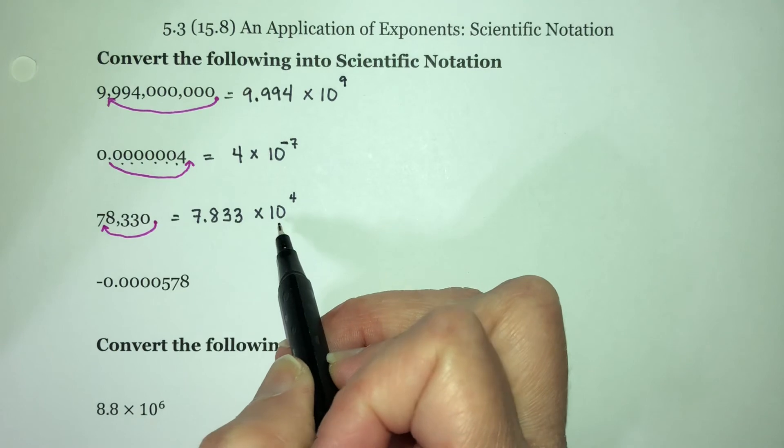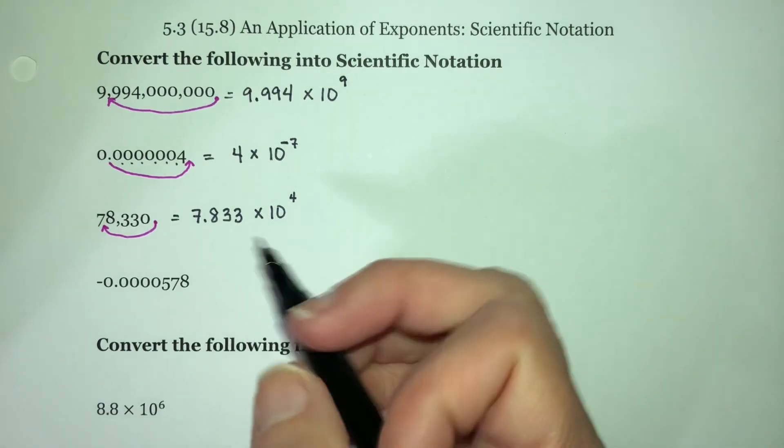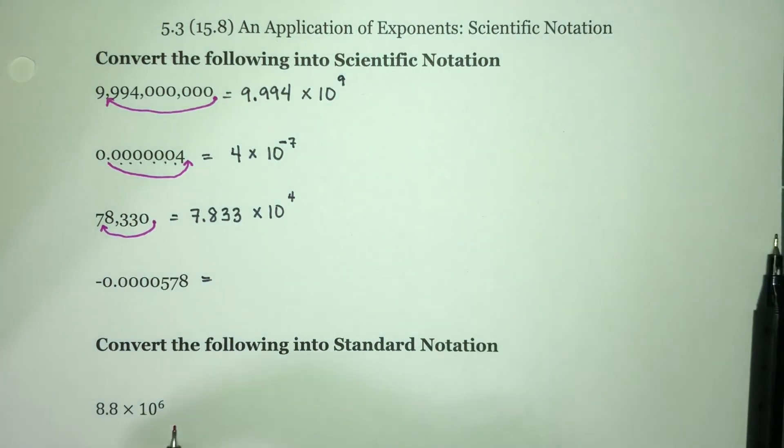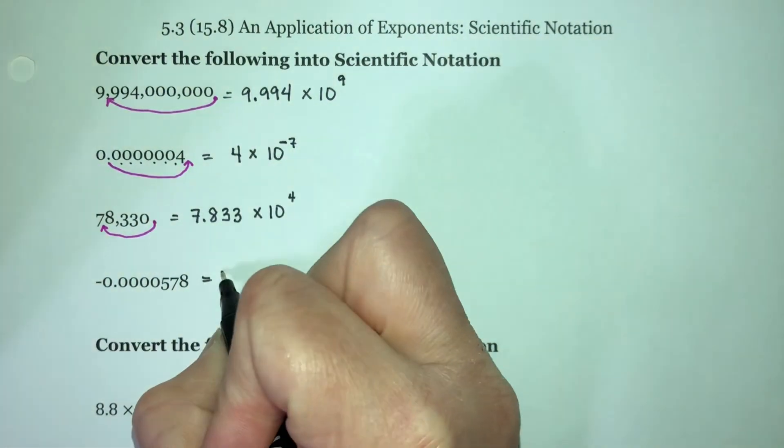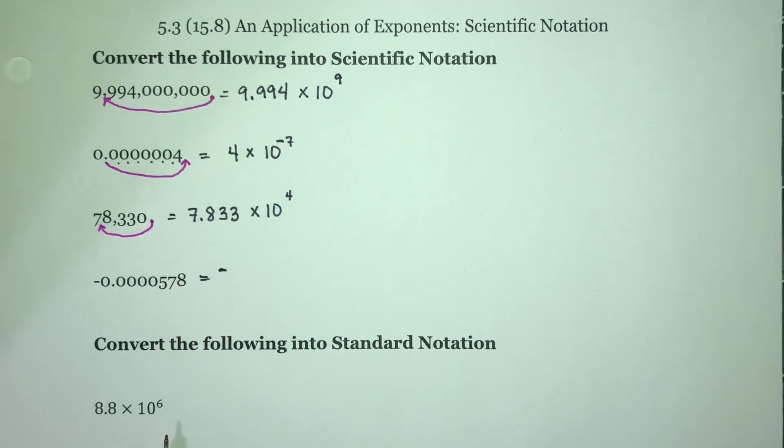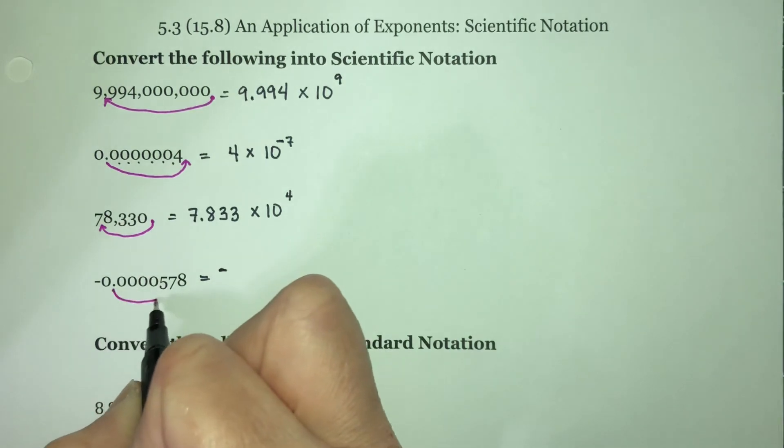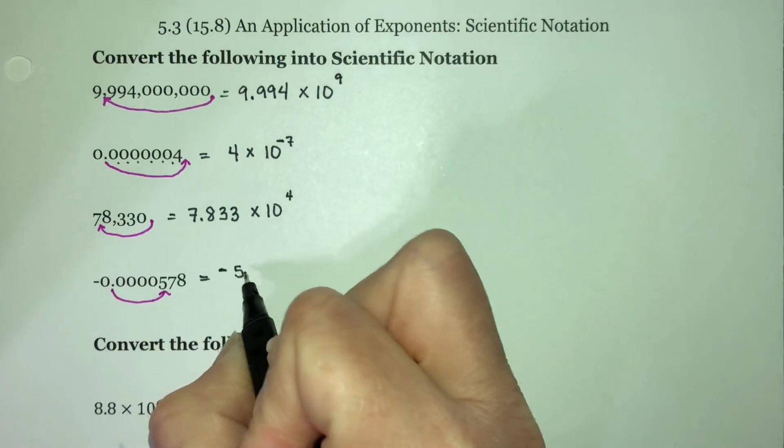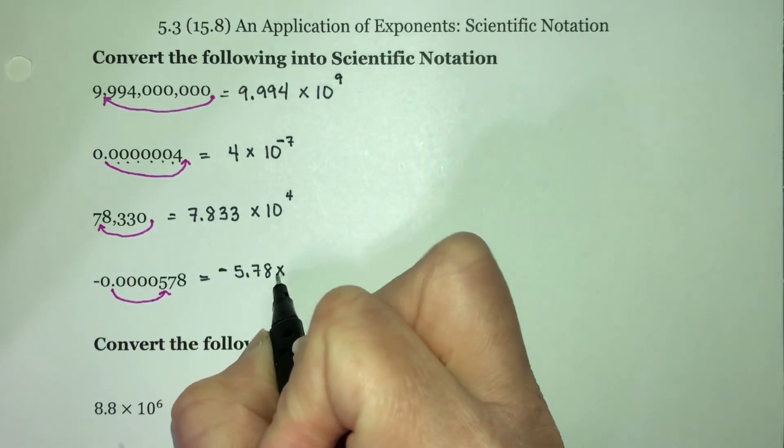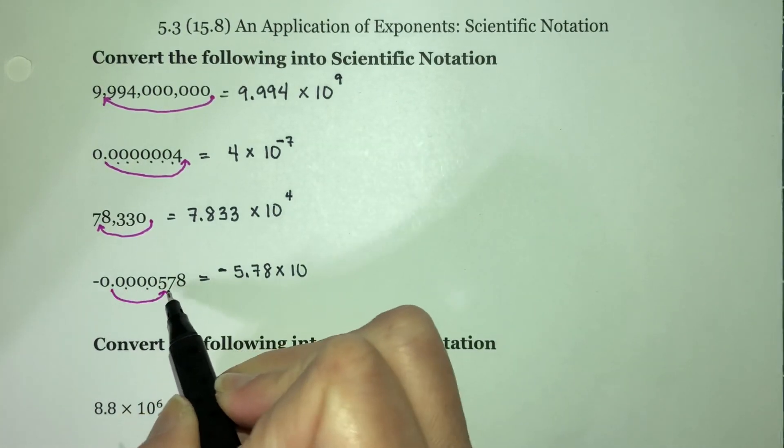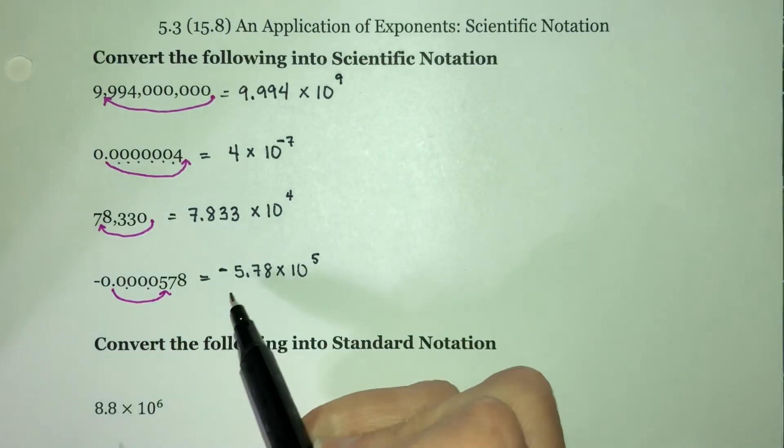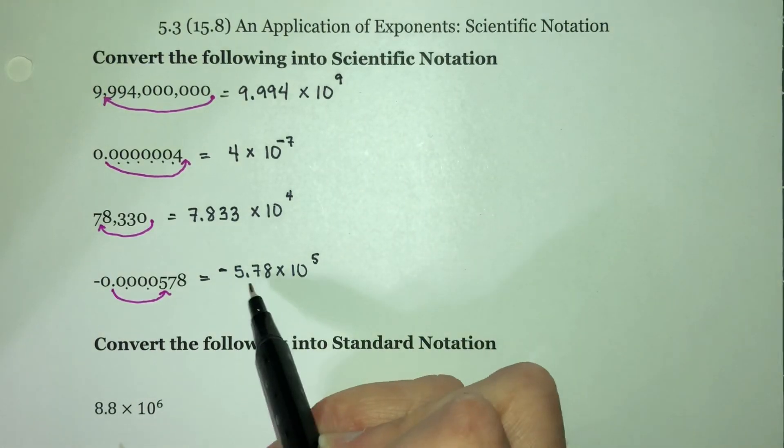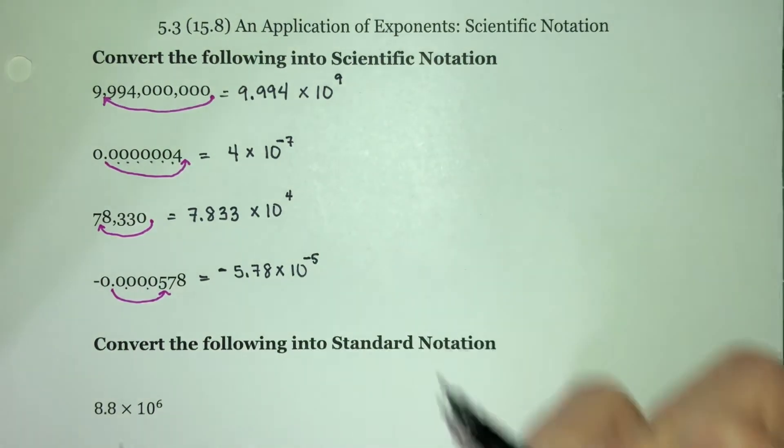For this one, first of all, this is a negative number. This is still a negative number. We are transforming the number, not changing the number, so carry over the negative and then you can just pretend it's not there. You've already taken care of it. I need to move this decimal point between the five and the seven, so I have negative 5.78 times 10. I've moved it one, two, three, four, five spots. Remember, we get to pretty much ignore the negative now. I need to be making this thing smaller, so it's negative 5.